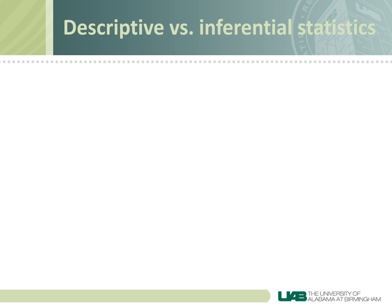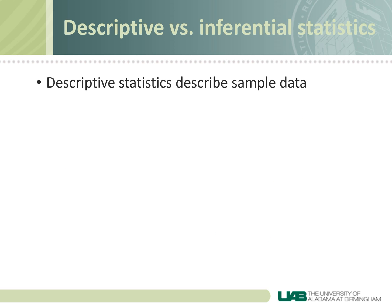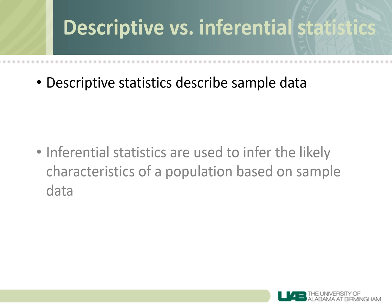Statistics is sometimes broken down into descriptive and inferential. Sometimes we just want to describe our sample — for example, we might want to just report the mean age and the median income — and we use descriptive statistics to do this. Other times, we want to use our sample data to estimate a population parameter, and we use inferential statistics to do that.